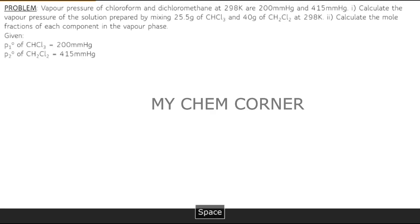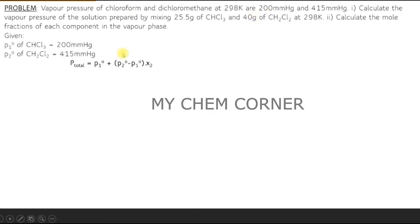What is given: vapor pressures of chloroform and dichloromethane — meaning p1° and p2° — are 200 mmHg and 415 mmHg respectively. The masses given are 25.5 g and 40 g. The formula for total vapor pressure is: p-total = p1° + (p2° − p1°) × x2. We have p1° and p2°, but we still need to find x2.